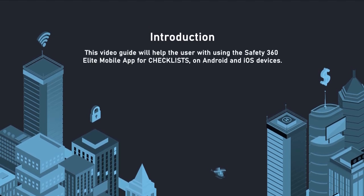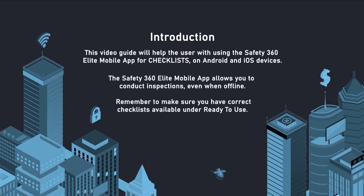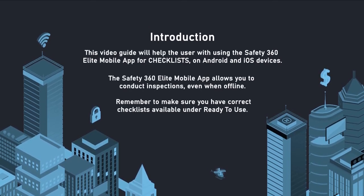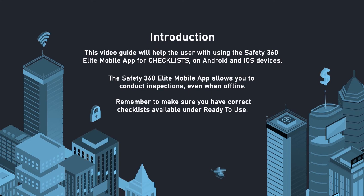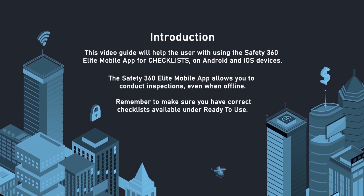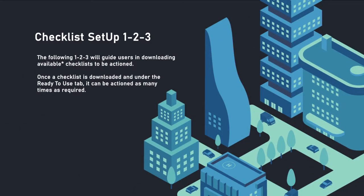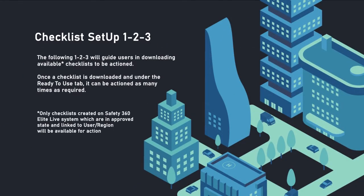This video guide will help the user with using the Safety 360 Elite mobile app for checklists on Android and iOS devices. Once a checklist is downloaded and under the Ready to Use tab, it can be actioned as many times as required.